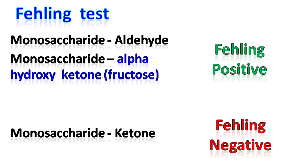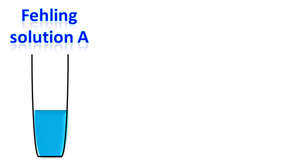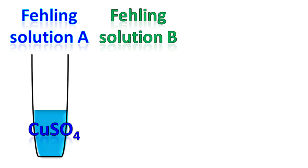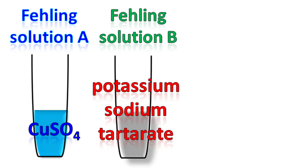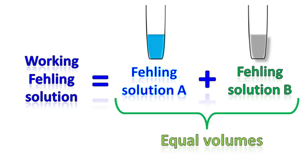Fehling's reagent consists of two solutions known as Fehling's A and Fehling's B. Fehling's A is an aqueous solution of copper sulfate, which is blue in color, while Fehling's B is an aqueous solution of potassium sodium tartrate along with a strong alkali such as sodium hydroxide.